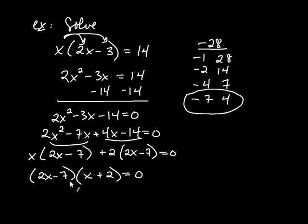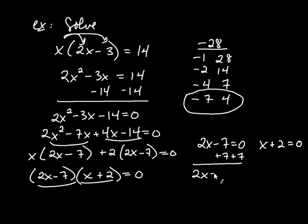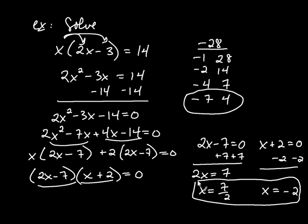So now what you do, it's A times B equals 0. So you set these individually equal to 0. So you get 2X minus 7 equals 0. And then the second one is X plus 2 equals 0. So I add 7 to both sides. So I get 2X equals 7. X is equal to 7 halves. That's my first solution. For the second solution I subtract 2 from both sides. And I get X is equal to negative 2. And these would be my two solutions, positive 7 halves and negative 2.